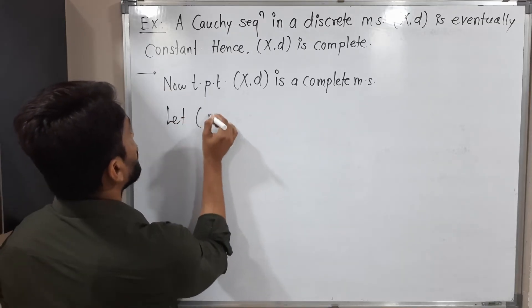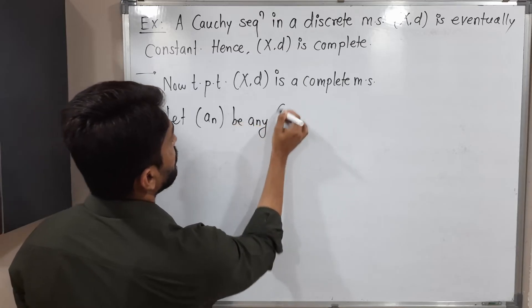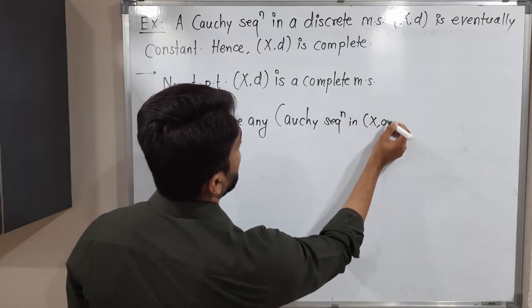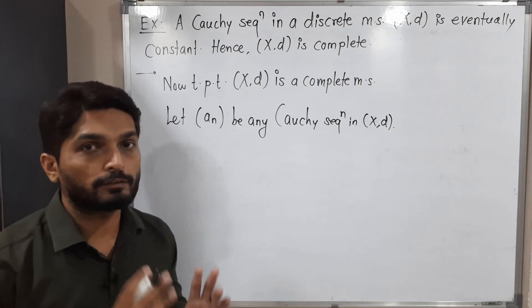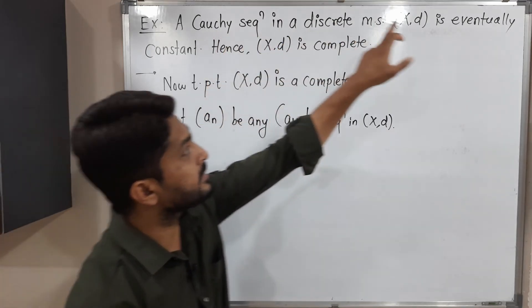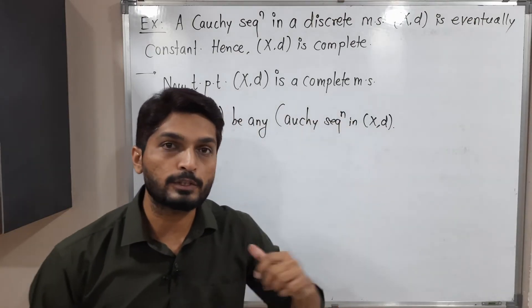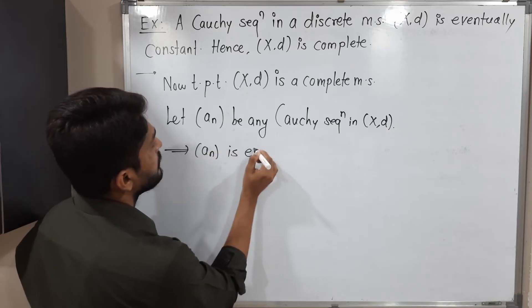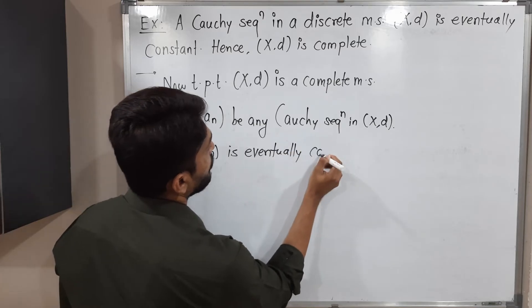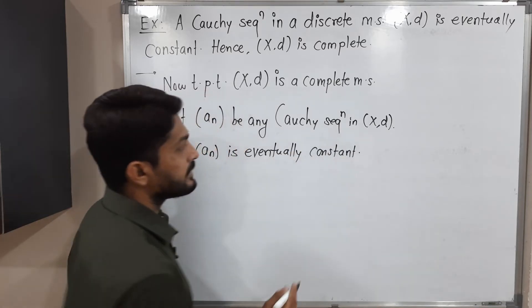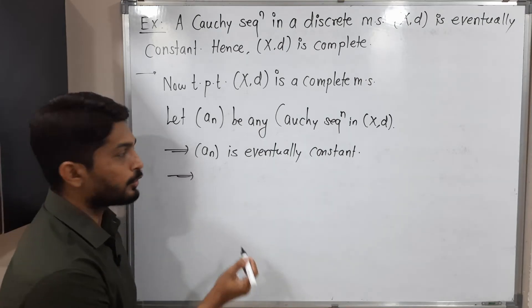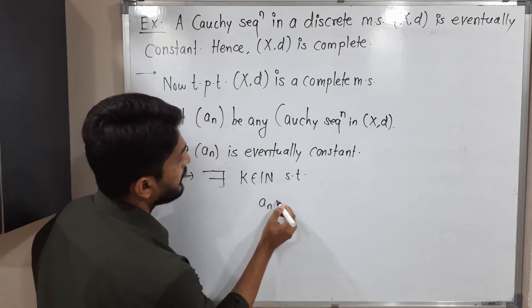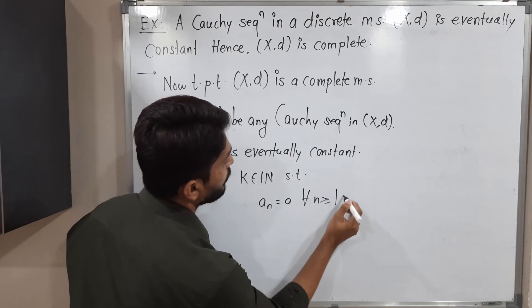Let a_n be any Cauchy sequence in X_d. Our target is to prove it is convergent. But just now we proved every Cauchy sequence is eventually constant, so this Cauchy sequence is also eventually constant. By definition of eventually constant sequence, there exists some fixed k belonging to the set of natural numbers such that a_n = a for all n ≥ k.